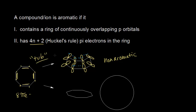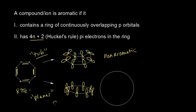What if cyclooctatetraene adopted a planar conformation? We're going to pretend that it does. Each carbon is sp2 hybridized, so each carbon gets a p orbital. We have a total of 8 carbons, so 8 p orbitals — that's 8 atomic orbitals. According to MO theory, those 8 atomic orbitals give us 8 molecular orbitals. Drawing all eight would be too much for this video, so we're going to show their relative energies using a Frost circle.